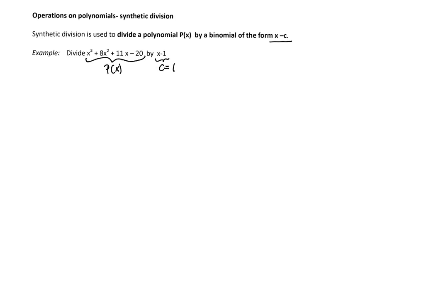Then we'll write the coefficients of that polynomial in the order they come in that standard form. So the coefficients are: leading coefficient is 1, then we have 8, 11, and negative 20. To the left of that list of coefficients, we write our value of c, which is 1, and between the c and the list of coefficients, we'll draw the division symbol. Now we are ready to perform synthetic division.